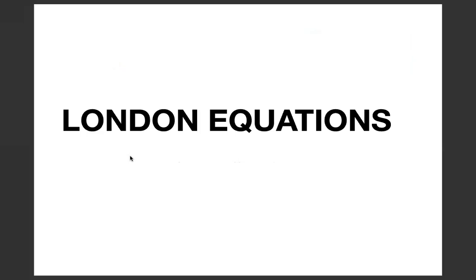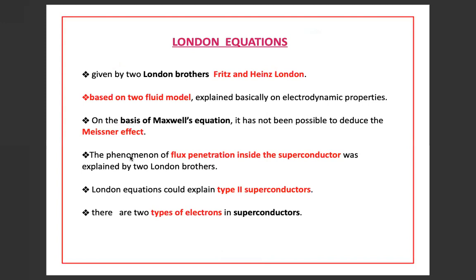Today we will discuss London equations, which were given by two brothers F. London and H. London. These are based on the two-fluid model, explained on electrodynamic properties. We have already seen that it has not been possible to explain the Meissner effect on the basis of Maxwell's equations. Later, London brothers explained the phenomena of flux penetration inside the superconductor. London equations could explain the electrodynamics of type 2 superconductors.